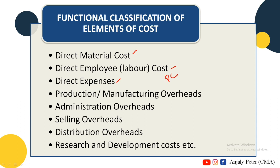Next is Production and Manufacturing Overhead. The production process is involved in the manufacturing process. The entire cost of the factory is included in production and manufacturing overhead — that is the cost and value of the factory.